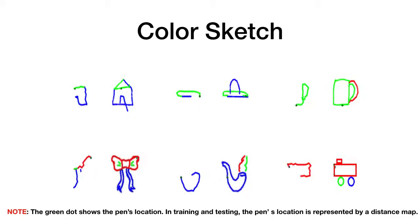Here shows the doodling of the color sketch media type. It is worth mentioning that the green dot shows the pen's location. In training and testing, however, the pen's location is represented by a distance map rather than the dots.